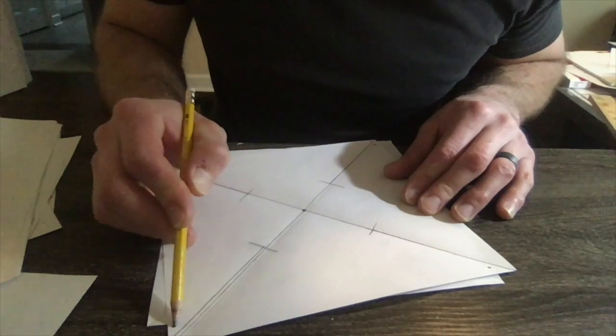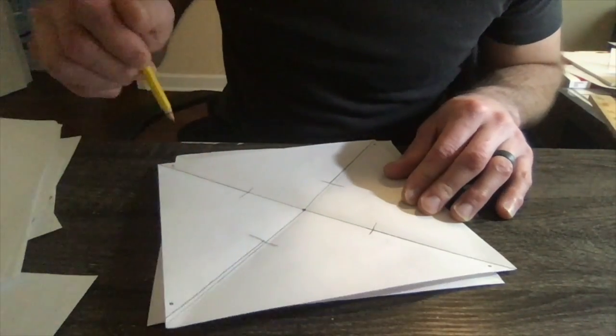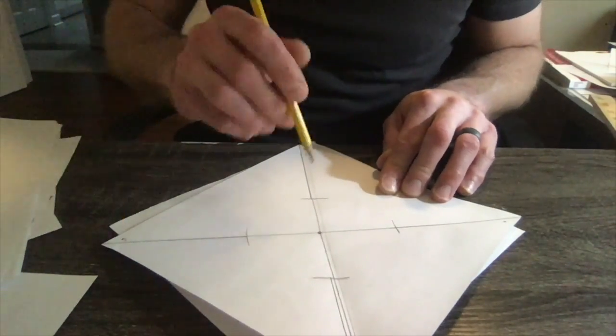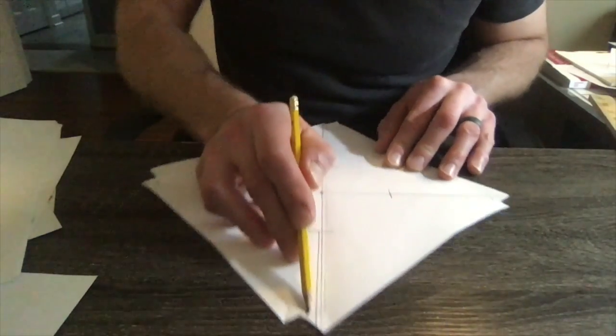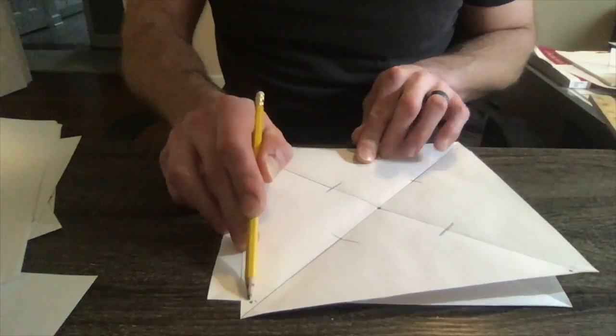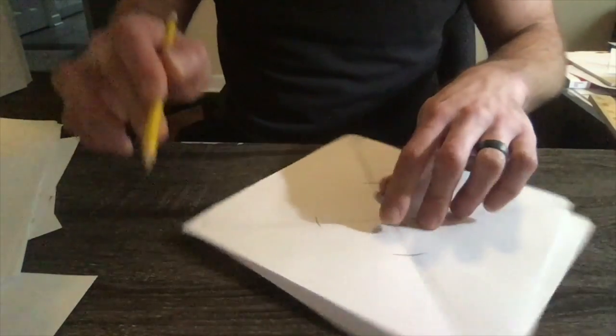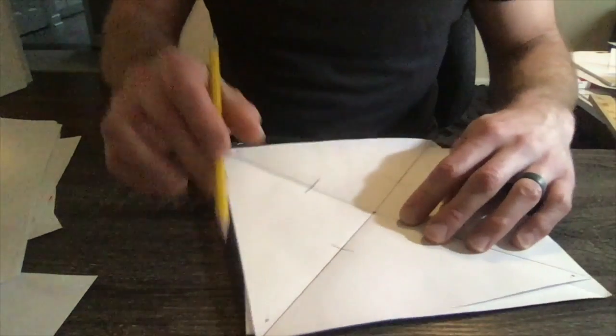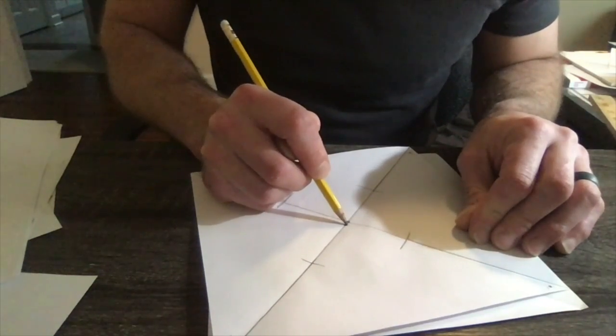Van a dibujar una marca en cada triángulo del cuadrado. Hay cuatro triángulos. Hay cuatro marcas. Una, dos, tres, cuatro. Una final en el centro. One final dot in the middle.